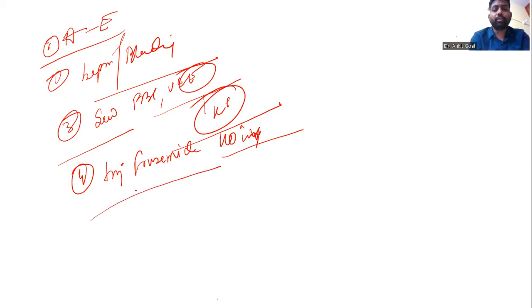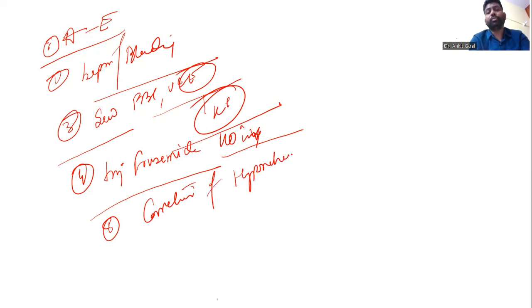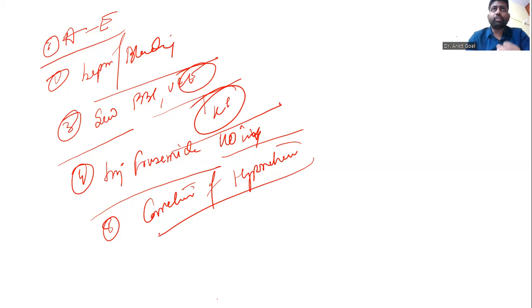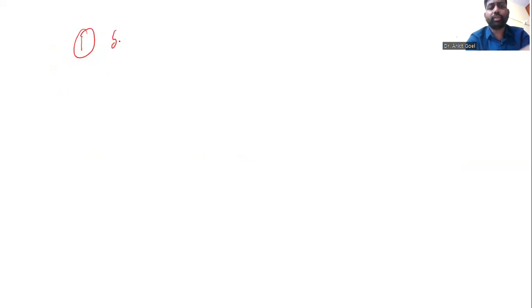After furosemide, the next important step is correction of hyponatremia. This is important — the basic protocol. When it comes to correction of hyponatremia, we should be very clear about this. The first principle is you find out the sodium deficit.